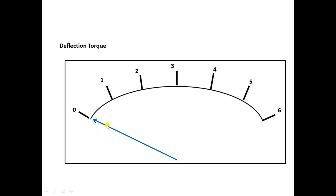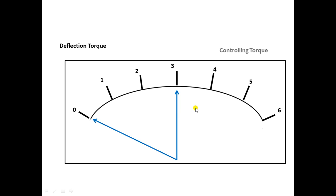Once the deflection torque is provided, the pointer moves away from its zero position. Let's assume the current in the circuit is 3 amperes, so the pointer should go and stay at position 3. The controlling system provides the controlling torque, which brings the pointer to the position where the deflecting torque equals the controlling torque — called the equilibrium position.